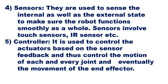Fourth are sensors, which are the input devices. Sensors give input signals to the controller and are used to sense the internal as well as external state of the robot to ensure it functions smoothly. Internal state sensors give the internal status of the robot, while external state sensors give the external environment status. Sensors include touch sensors, infrared sensors, and others.